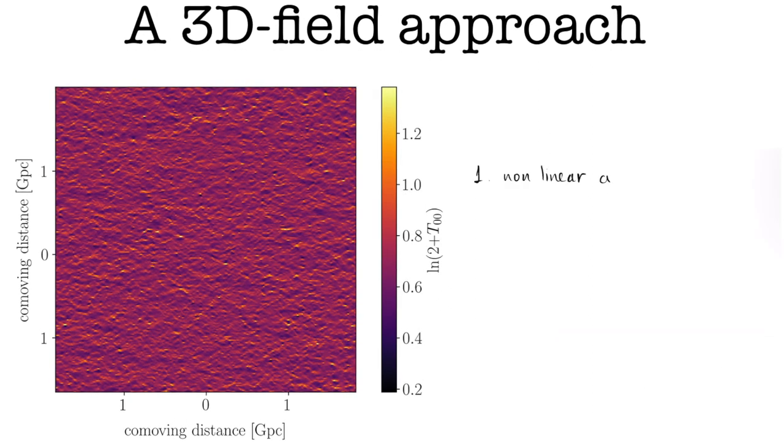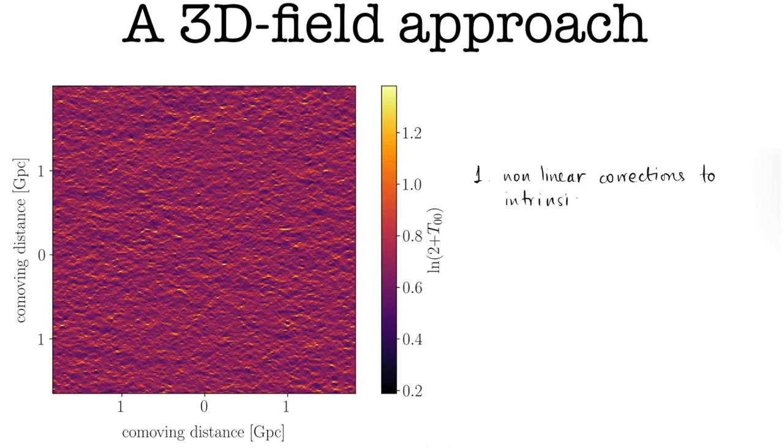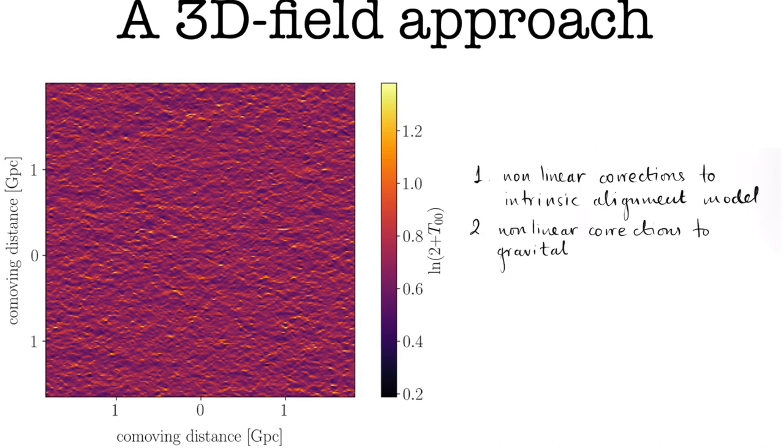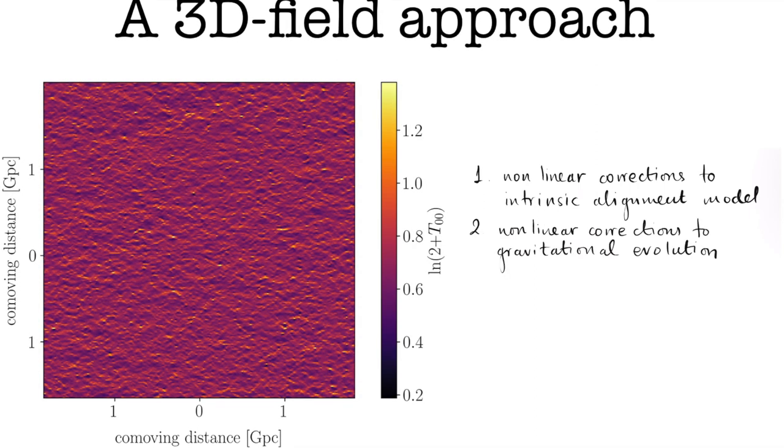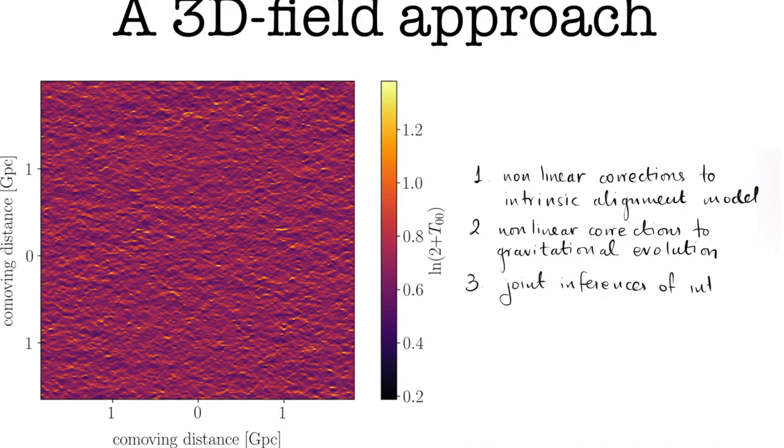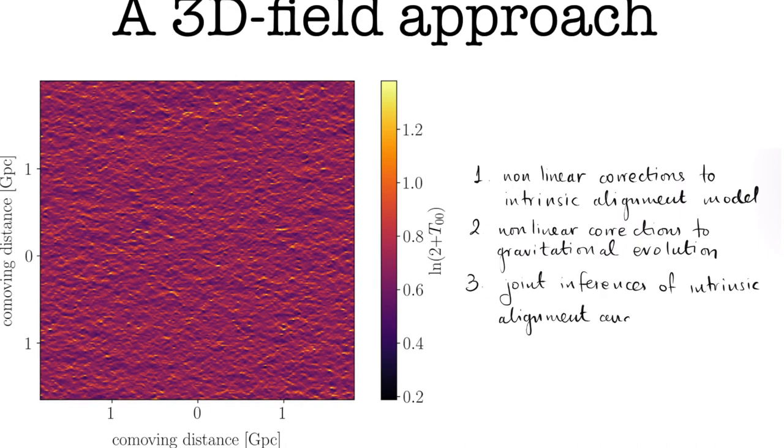First, it can accommodate non-linear corrections to the intrinsic alignment model. Second, it can be extended to smaller scales, incorporating non-linear corrections to gravitational evolution. Third, it facilitates joint inferences of intrinsic alignment and weak lensing.